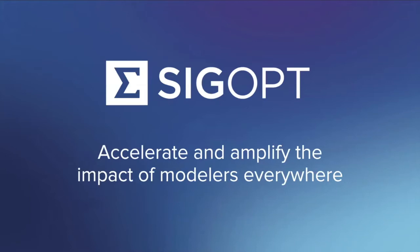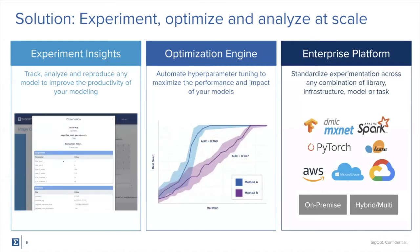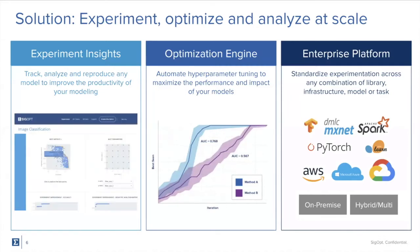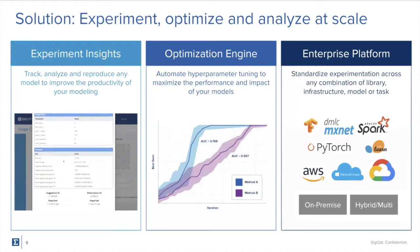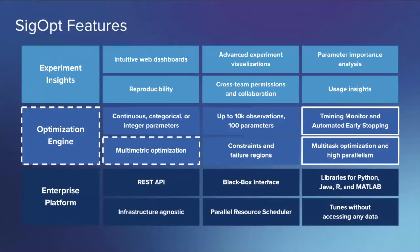At SIG App, we have a vision which is to accelerate and amplify the impact of models everywhere. That means we're trying to augment your work by making you more efficient and being able to bring better models into production. We have built a platform with three components: Experiment Insights, Optimization Engine, and Enterprise Platform. If you're interested in knowing more, you can find the previous talk on YouTube where I dig into each of these three components. This is the second talk in the series.